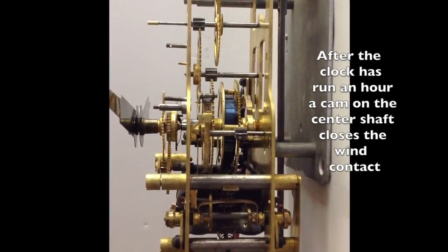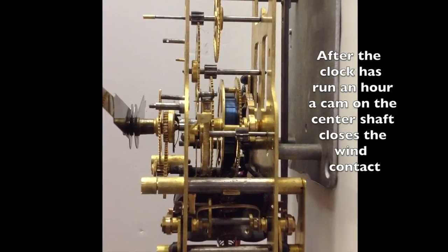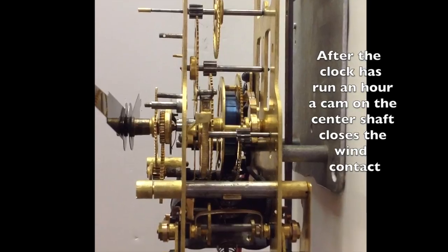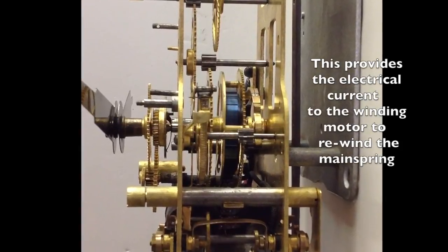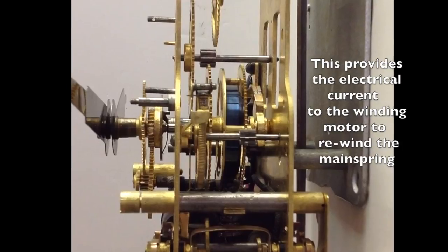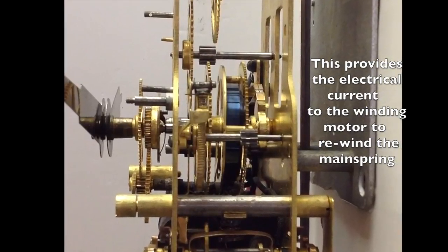After the clock has run an hour, the cam on the center shaft closes the wind contact. This provides the electrical current to the winding motor to rewind the mainspring.